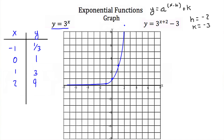Now we want to graph y equals 3 to the x plus 2 minus 3. This is the same graph as y equals 3 to the x, except with a translation to the left 2 units and down 3 units in the negative y direction. So every one of these points can be moved 2 to the left and down 3. Connecting these points gives us the graph of our translated function.